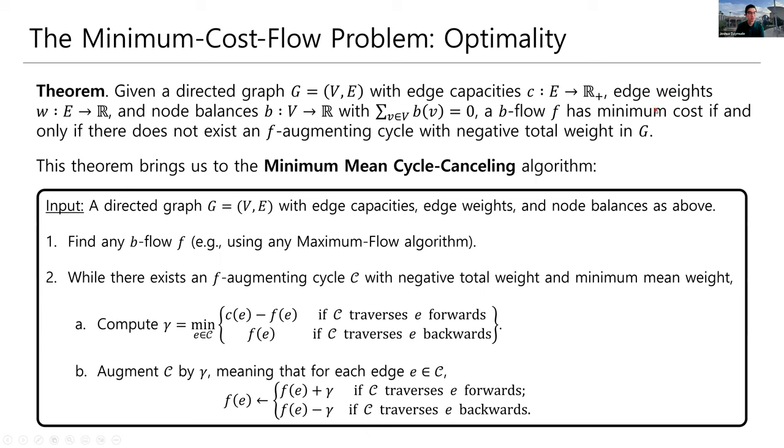The last thing that's worth saying about this is this minimum mean weight piece. That's where this algorithm gets its name, the minimum mean cycle canceling algorithm. This is just like how when we went from Ford-Fulkerson to Edmonds-Karp, Edmonds-Karp said, hey, it's not just any f-augmenting path you want, it's the shortest f-augmenting path. This algorithm is essentially doing the same thing. It's saying, hey, it's not just any negative total weight f-augmenting cycle that you want, it's the one with minimum mean weight. And if you do this, then eventually you will reach a b-flow in polynomial time.